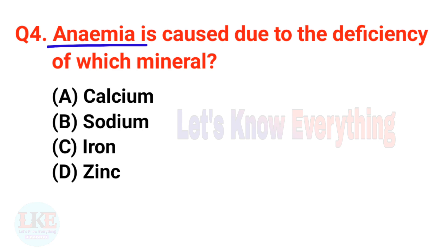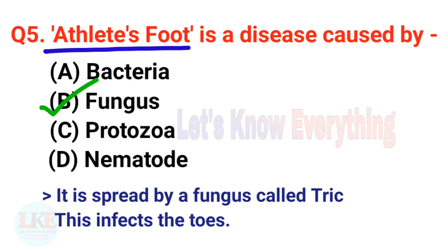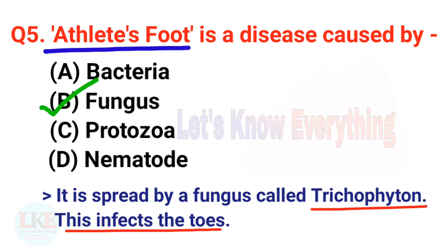Question number four: anemia is caused due to the deficiency of which mineral? A) Calcium, B) Sodium, C) Iron, D) Zinc. The right answer is option C, iron. Question number five: athlete's foot is a disease caused by a fungus called Trichophyton, which infects the toes.